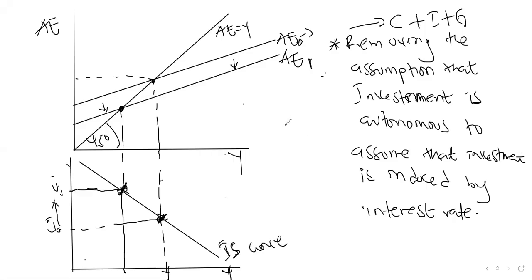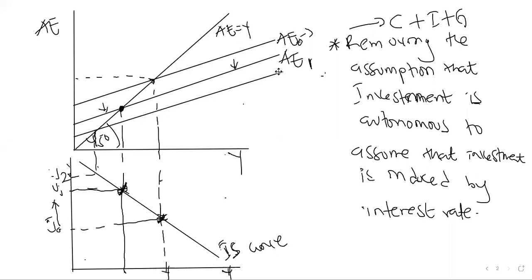The IS curve is simply a combination of interest rate and national income. It shows the equilibrium in the goods market by plotting interest rates against national income. The only factor that will lead to a movement along the IS curve is the interest rate. If interest rates shift further — say to I2 — the equilibrium aggregate expenditure will also fall to AE2. Interest rate is the only factor that causes a movement along the IS curve.